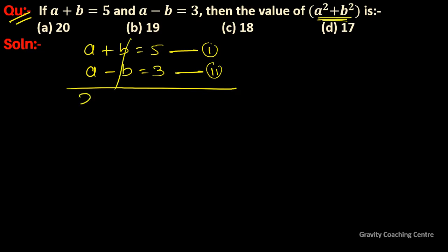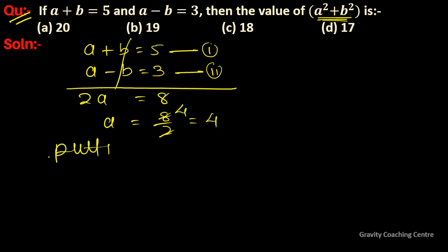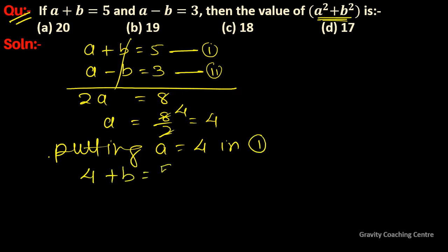Adding the two equations, we get 2a equals 8, so a equals 8 divided by 2, which equals 4. Now putting a equals 4 into equation one, we get 4 plus b equals 5.